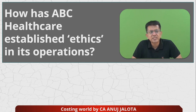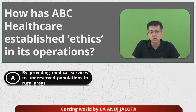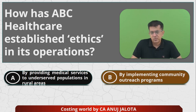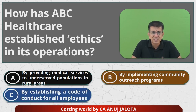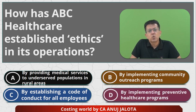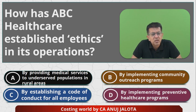How has ABC Healthcare established ethics in its operations? Option A — providing medical services to underserved populations in rural areas — that is effectiveness, not ethics. Option B — implementing community outreach programs — again effectiveness. Option C — establishing a code of conduct for all its employees — that is what we discussed as ethics. Option D — implementing preventive healthcare programs — again effectiveness. So A, B, and D are related to effectiveness, and the answer is C — that is the correct answer.